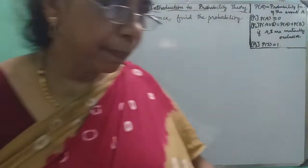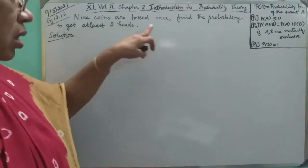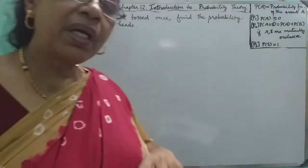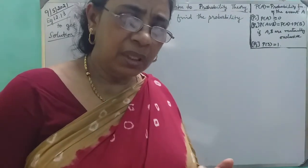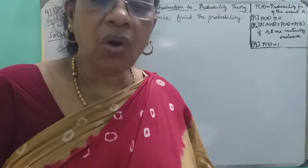Hello students, for example 12.13, nine coins are tossed once. Find the probability to get at least 2 heads. This is under some theorems on probability using complement.